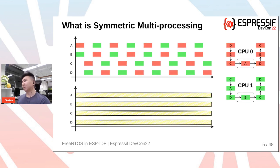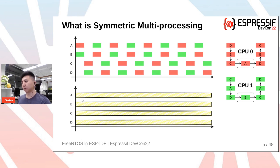What is Symmetric Multiprocessing? The technical definition is a multi-core system where each CPU has access to the same memory bus. However, in the context of multitasking, SMP just means you have different tasks which can run on both CPUs. And if the CPUs switch between tasks quickly enough, it will appear as if all tasks are running in parallel on both CPUs.